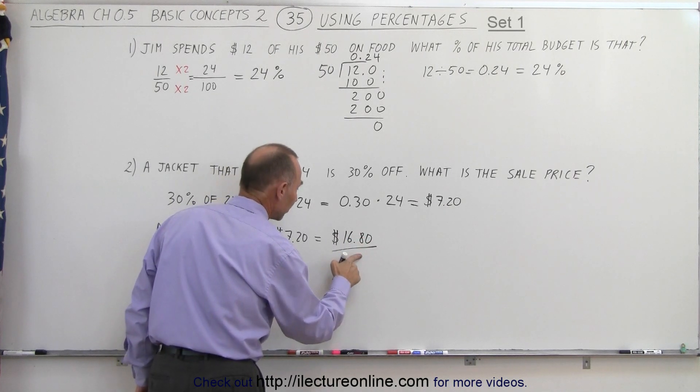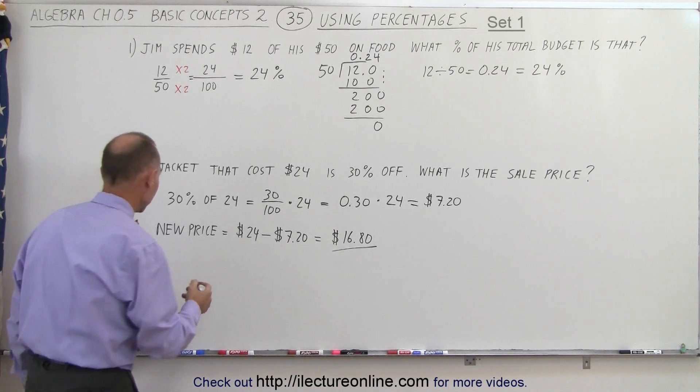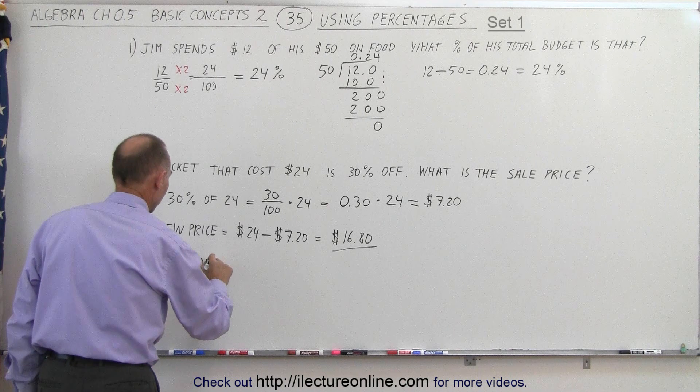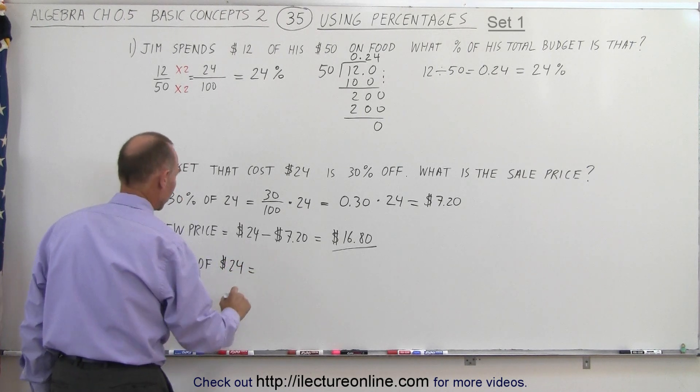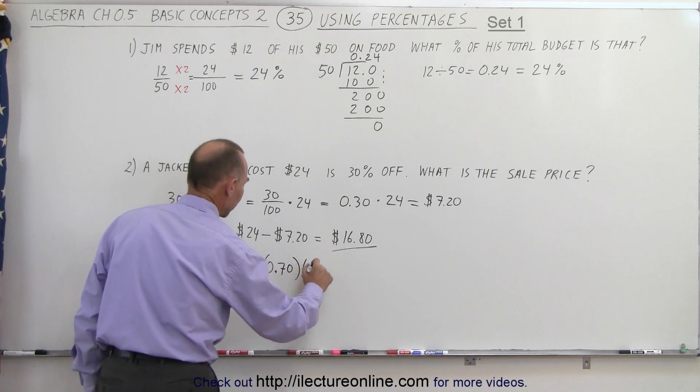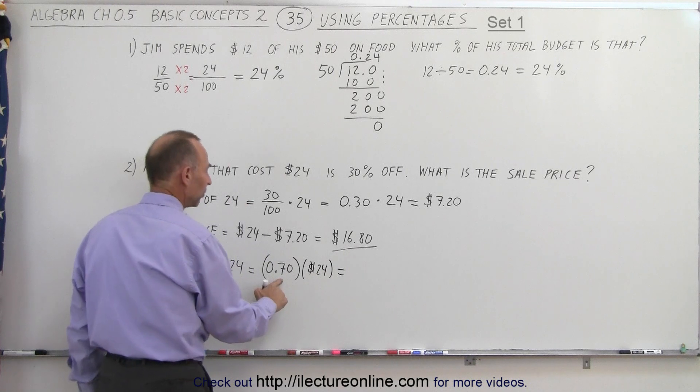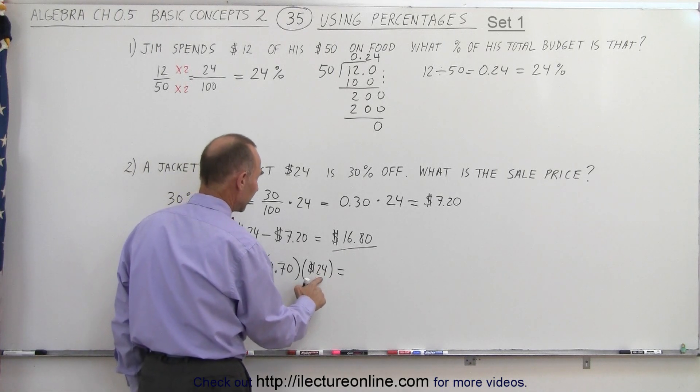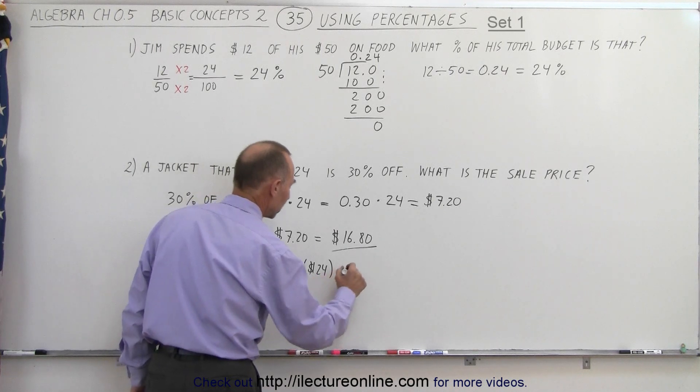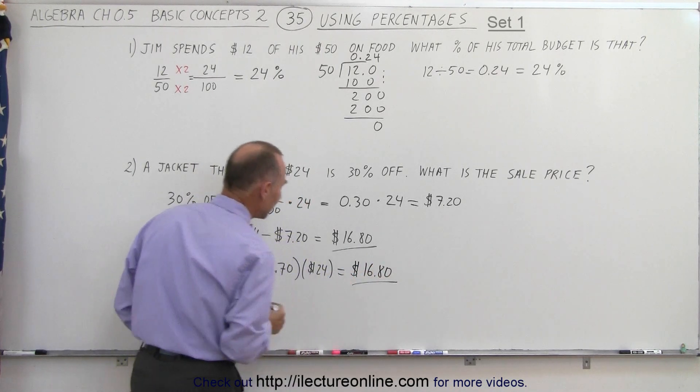This is 70% of the original price. That's another way to attack it. We can say 70% of $24 equals 0.70 times $24. So 0.7 times 20 is $14, 0.7 times 4 is $2.80. That gives us $16.80.